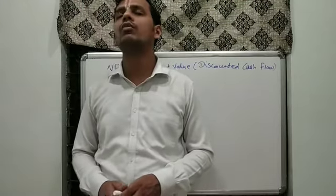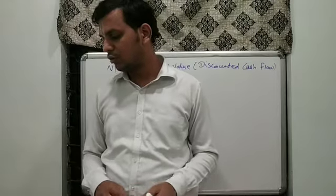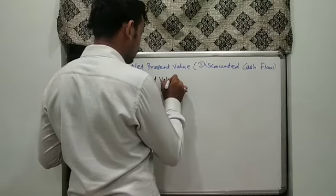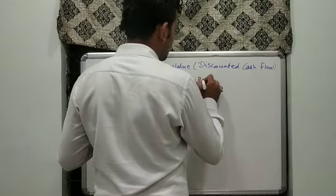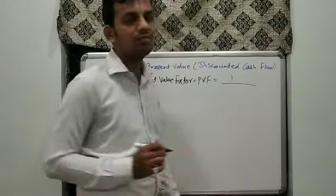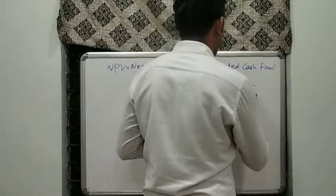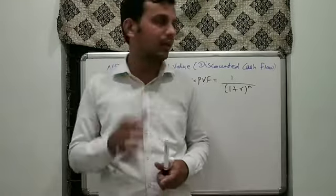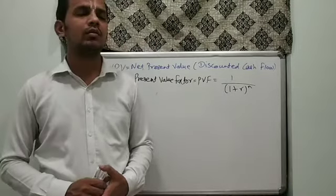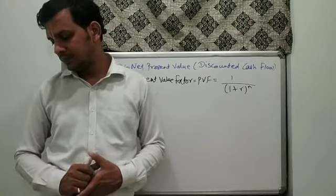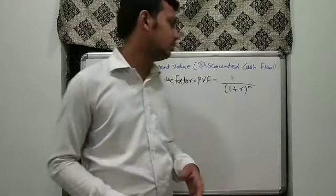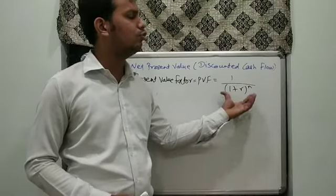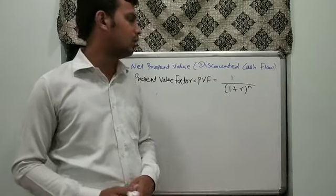That is the technique of discounted cash flow. For the purpose of calculation, in NPV we use the present value factor, which we call PVF. The formula is 1 divided by (1 plus R) raised to N, where R is the rate of interest and N is the number of years. Usually, the value of PV factor is already provided in the question, so we don't have to worry much about this formula, but we can still use it for calculation.